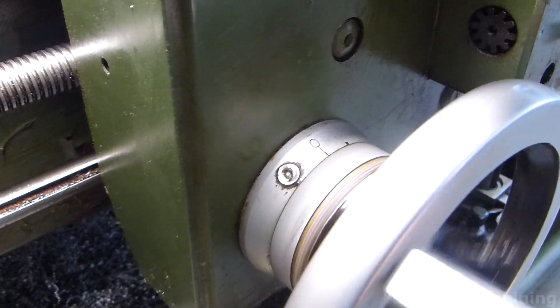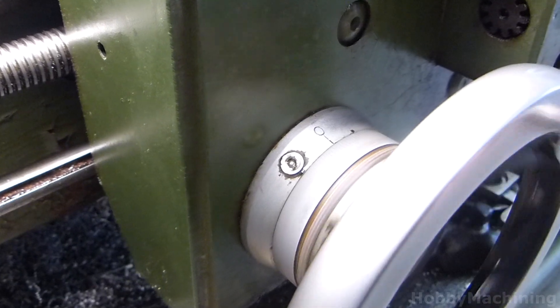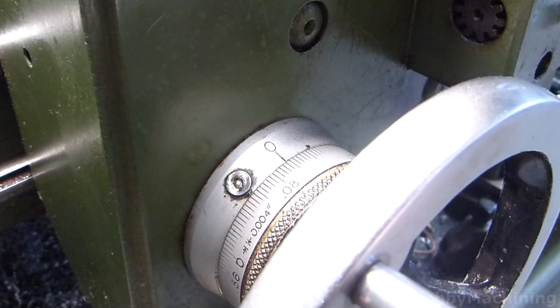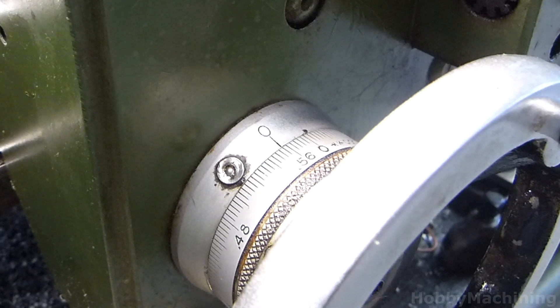For example, here on the carriage of this lathe, you can see as the direction of feed is changed, there is some play or backlash.